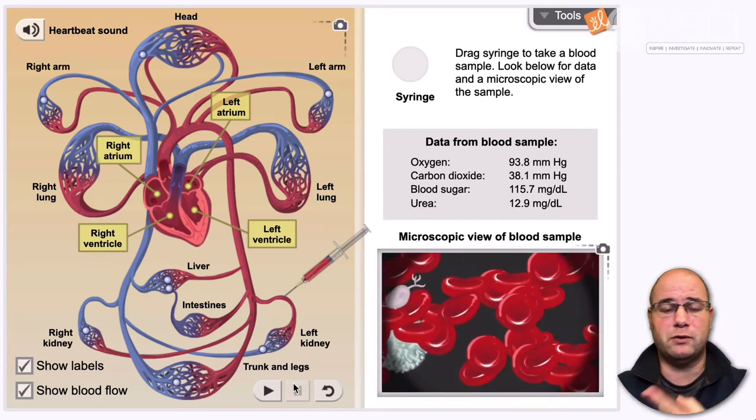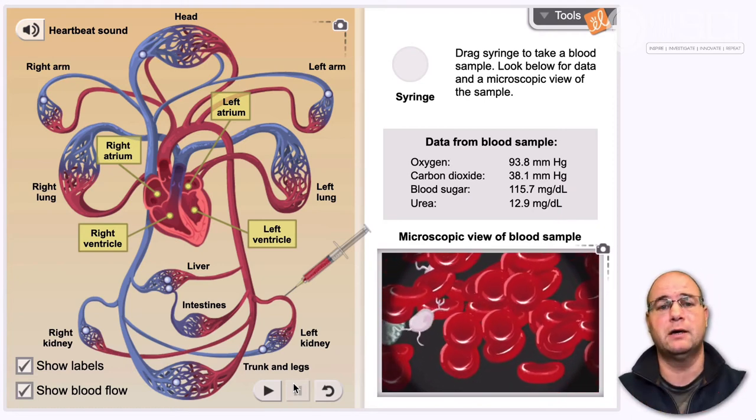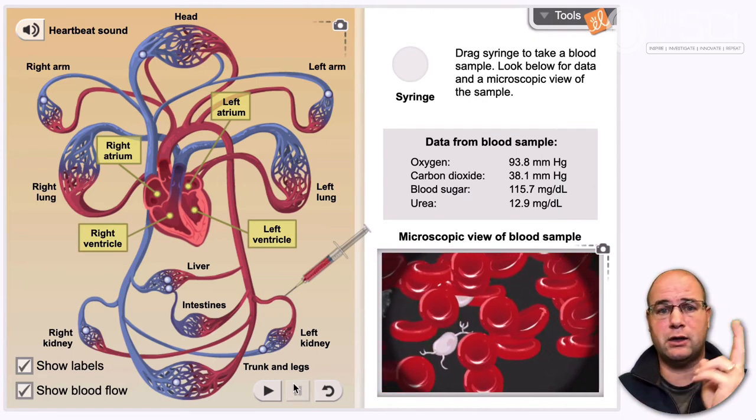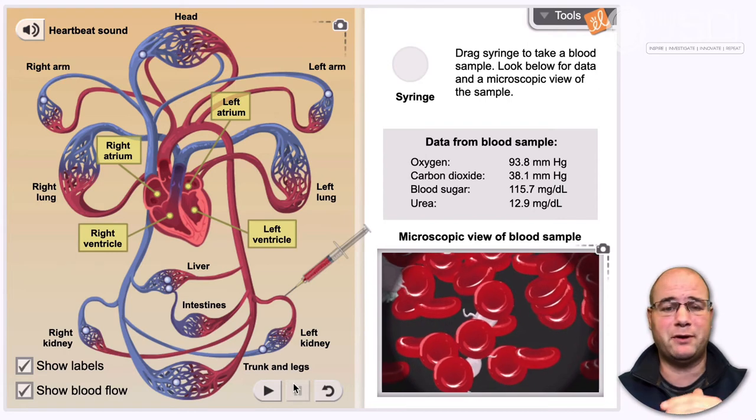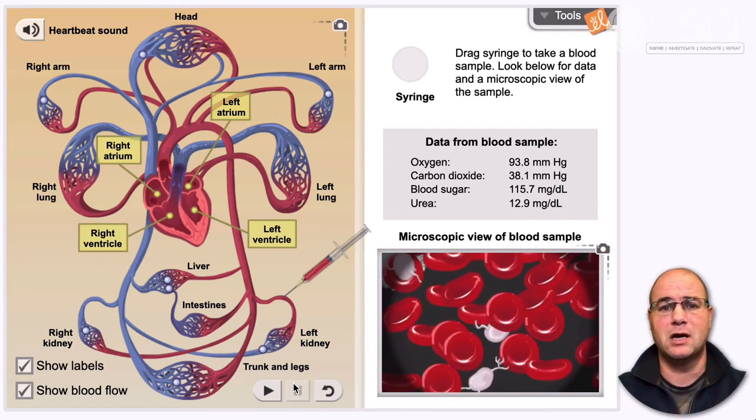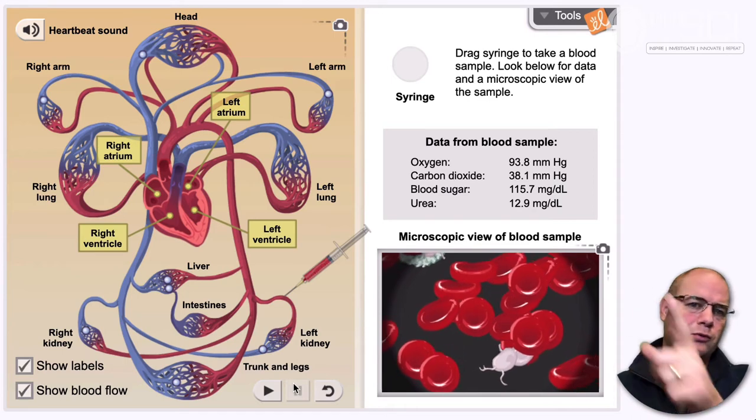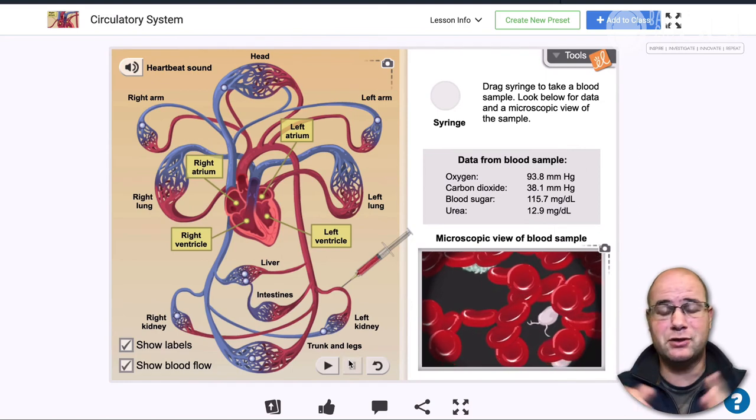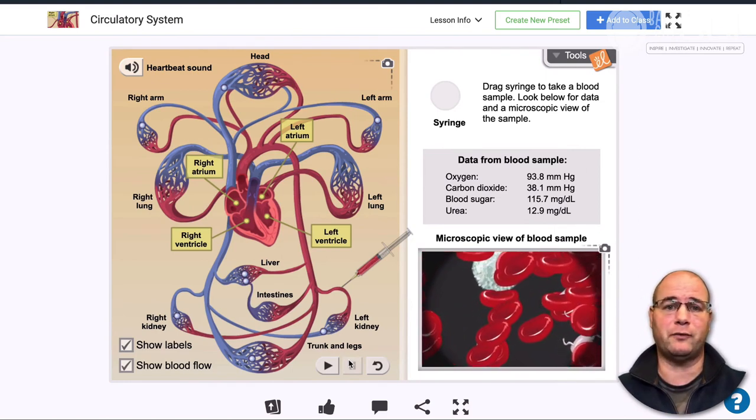Number one, you're going to investigate how the blood changes in different organs or appendages of the body. Number two, you're going to be able to look at how blood flows and moves through the heart in a two-loop system. And then number three, you can take a look at a microscopic view of the blood and a chemical analysis of those individual parts to see how they change as they go through that two loops and the appendages and organs of the body. So that is why you might want to use the circulatory system Gizmo and how you're going to go through that.